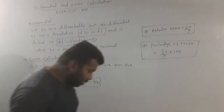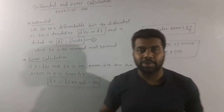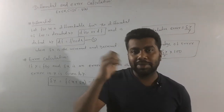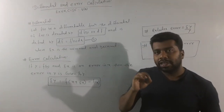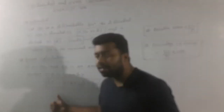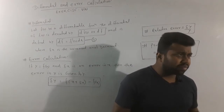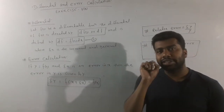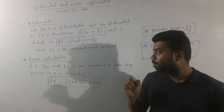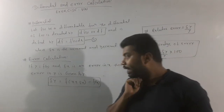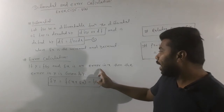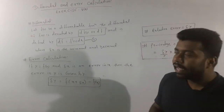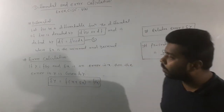Next, we will calculate error calculation. Generally, we find this in a physics-oriented chapter. When we measure something, we will not be 100% accurate, so we will have some errors. If y equals f(x) and δx is an error in x, then the error in y is given by δy equals f(x + δx) minus f(x). We have this theoretical formula.